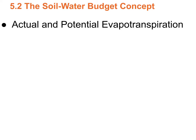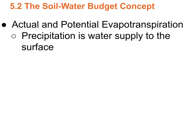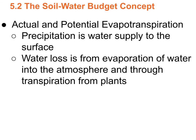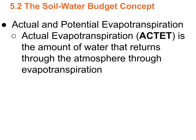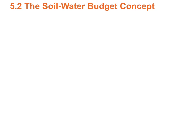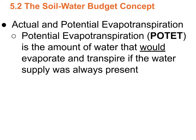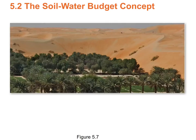Actual and potential evapotranspiration are probably the biggest words we'll use all semester. Precip is the water supply to the surface, and water is lost from evaporation and transpiration from plants — plant sweat. The combination is called evapotranspiration. ACTET (actual evapotranspiration) is the actual amount of water that returns to the atmosphere through evapotranspiration. POTET is the amount of water that would get used if you had an unlimited supply — it represents the energy available to use water, either by plants or by evaporation.